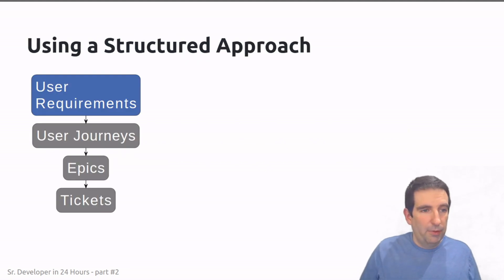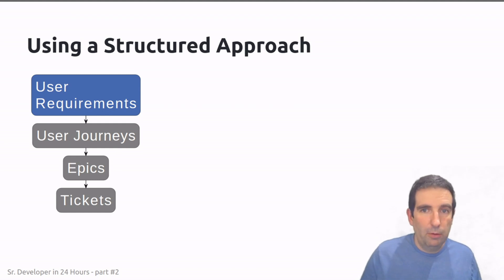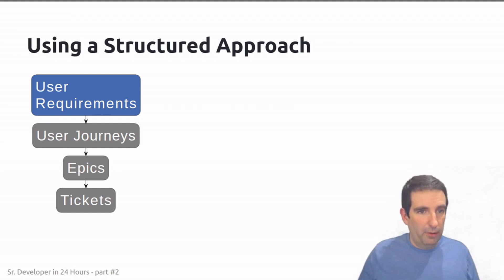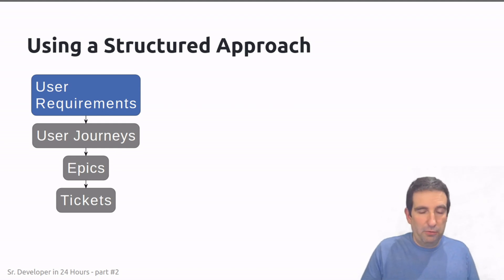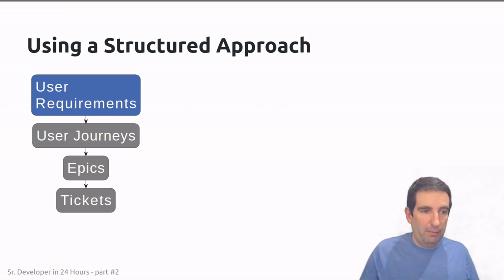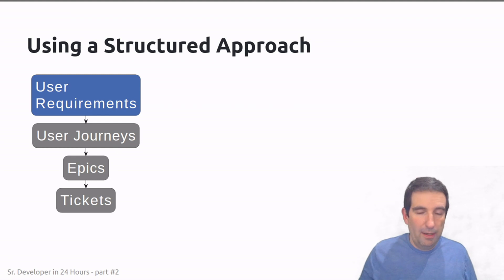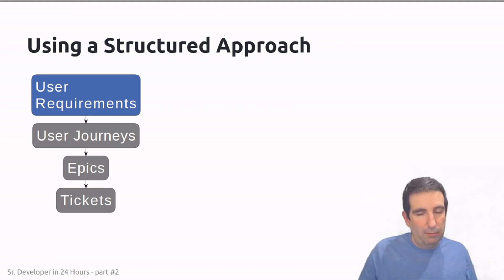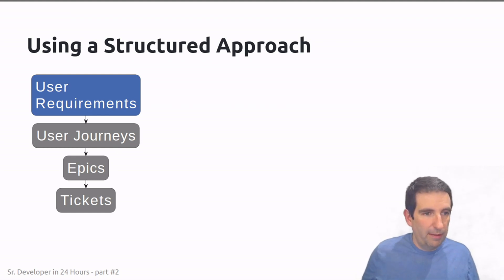We want to have a structured approach when doing these kinds of processes. We start by gathering user requirements, then turn those into user journeys, from user journeys we create high-level epics, and from the epics we go into the more detailed tickets. Let's start with the user requirements.